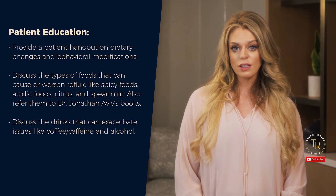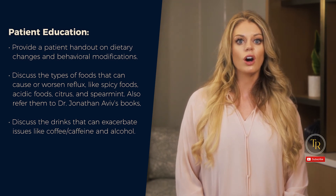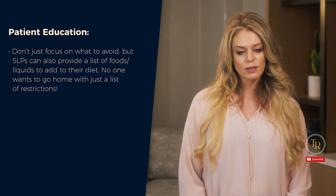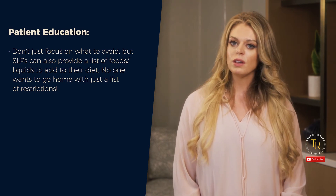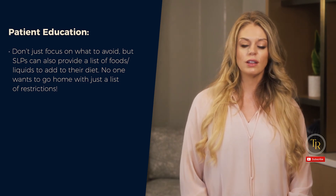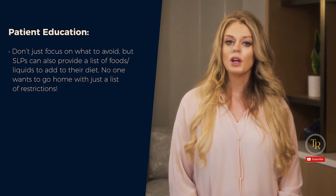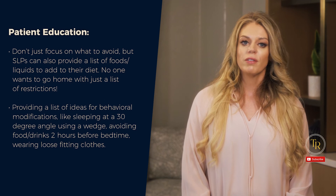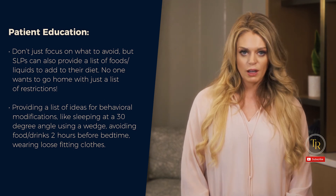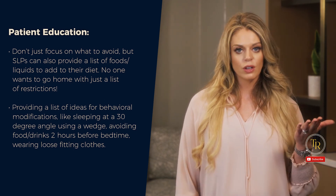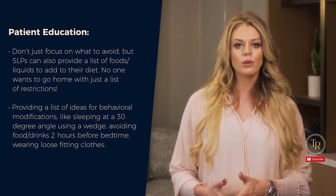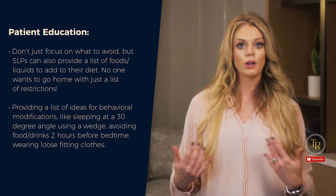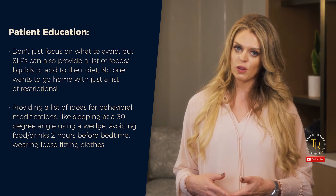Discuss drinks that can exacerbate issues like coffee, caffeine, and alcohol. Don't just focus on what to avoid — SLPs can also provide a list of foods and liquids to add to their diet, because no one wants to go home with just a list of restrictions. Providing behavioral modification ideas like sleeping at a 30-degree angle using a wedge, avoiding food or drinks two hours before bedtime, and wearing loose-fitting clothing is also within our scope.